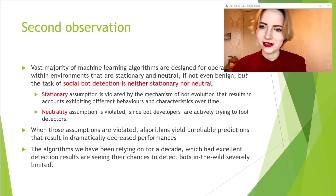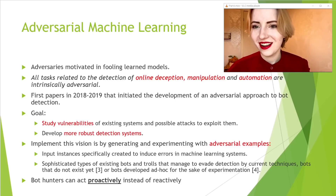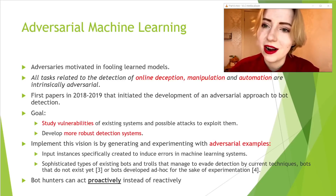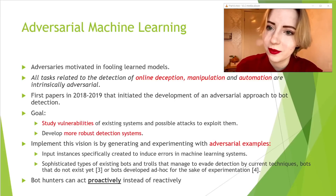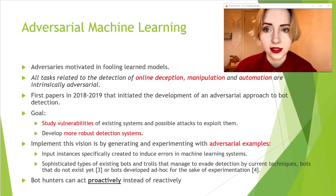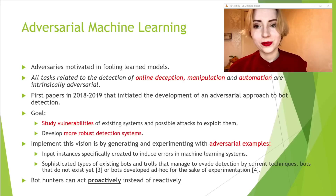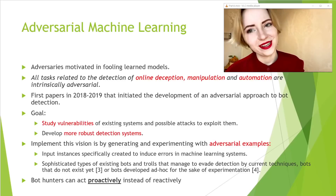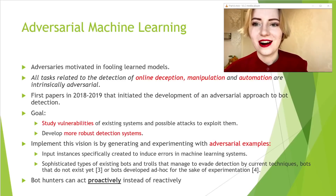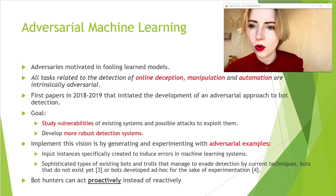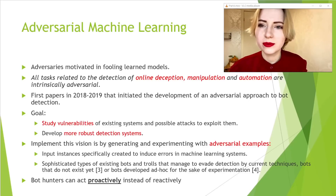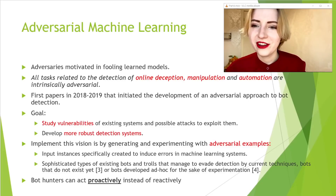One development discussed deeply in the article is adversarial machine learning, because all tasks related to online deception, automation, and manipulation are intrinsically adversarial. The goal of adversarial machine learning is to study vulnerabilities of existing systems and possible ways of exploiting them, producing more robust detection systems. By generating and experimenting with adversarial examples — those made to induce errors in detection systems — we can be more proactive instead of reactive, mitigating the previously mentioned observations.